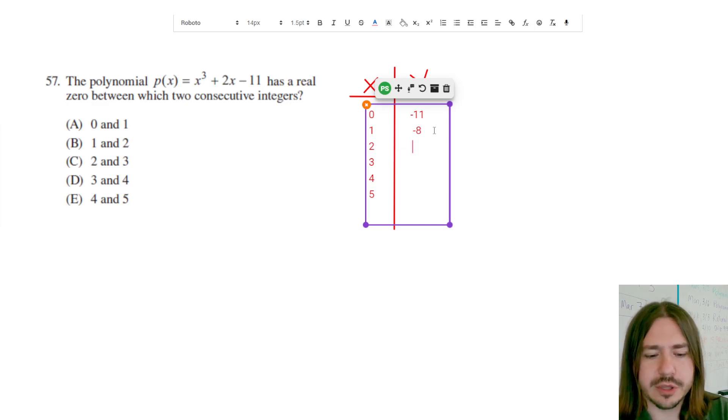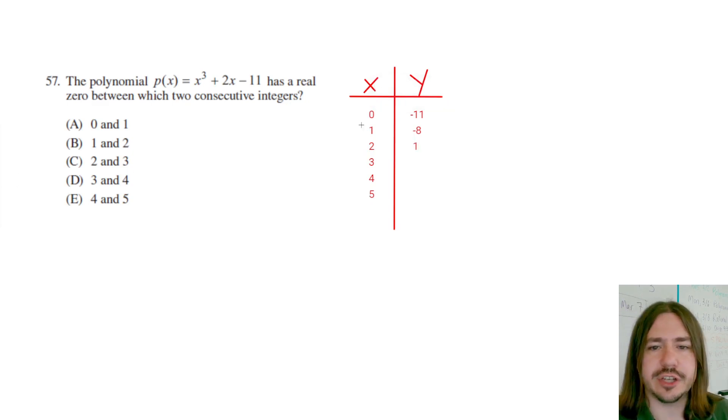Now I'm going to plug in 2, 2 cubed plus 2 times 2 minus 11, and I get 1. So now because I have a sign change here, I've got a sign change, meaning I went from negative to positive.